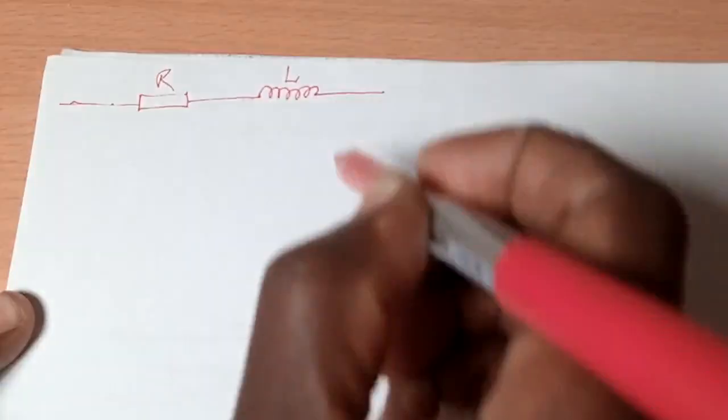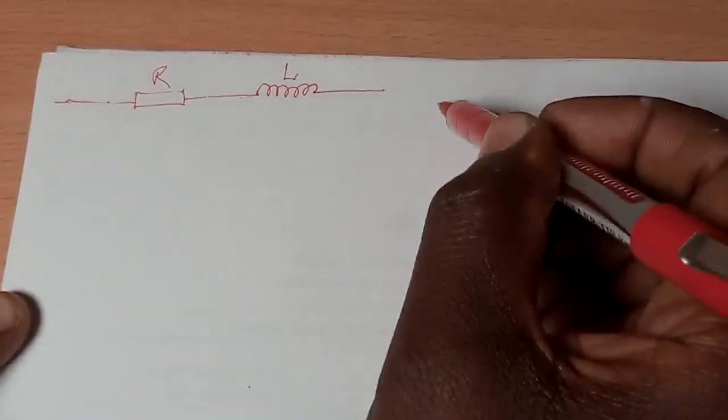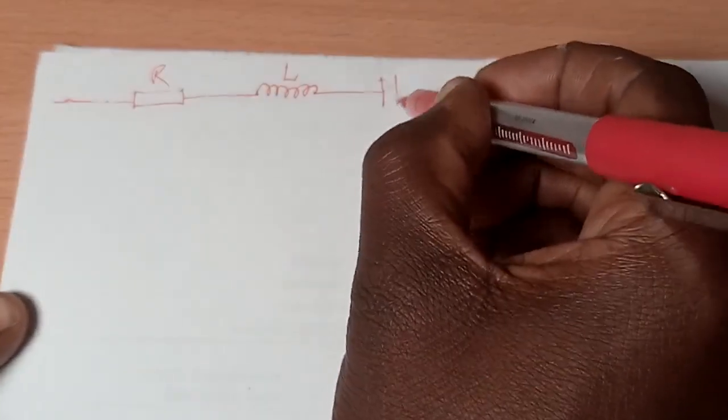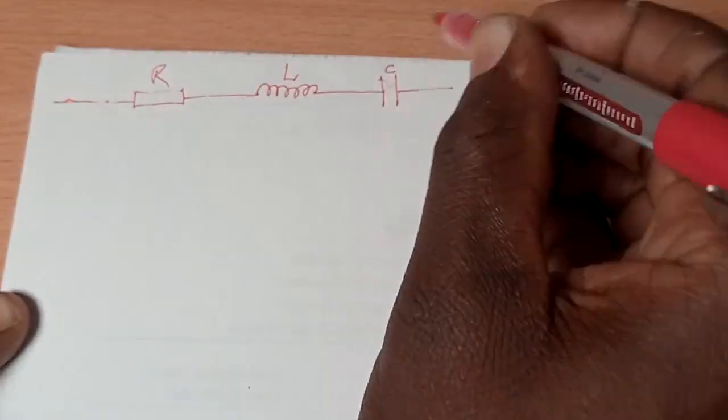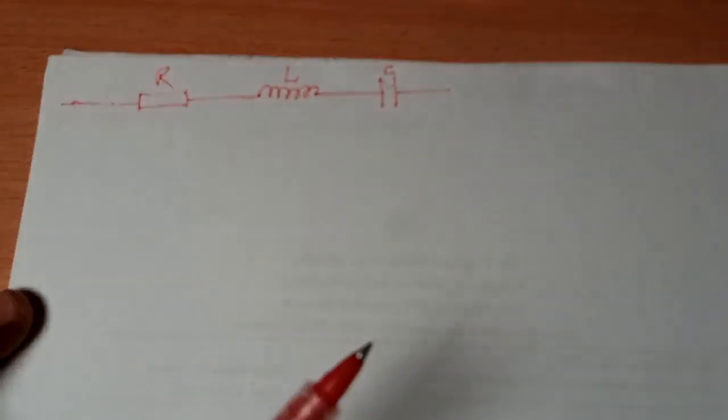This is my inductor L. After the inductor, I also have a capacitor. So this is my capacitor C. So I have all the three arranged in series. In series means end-to-end connections. They are arranged end-to-end to each other.